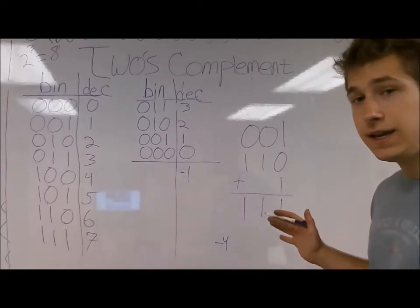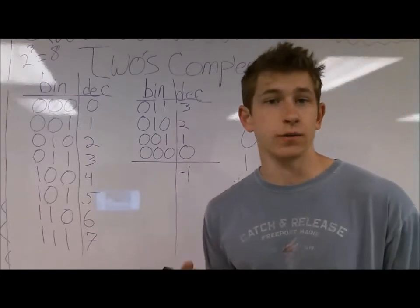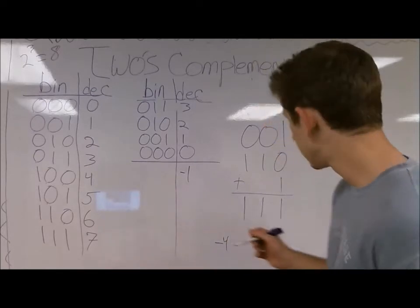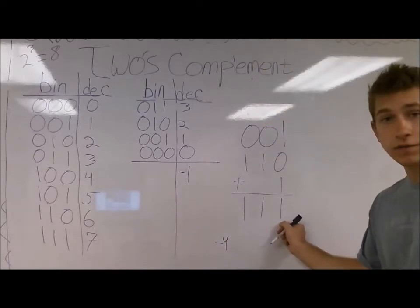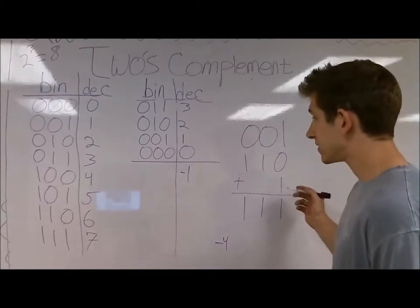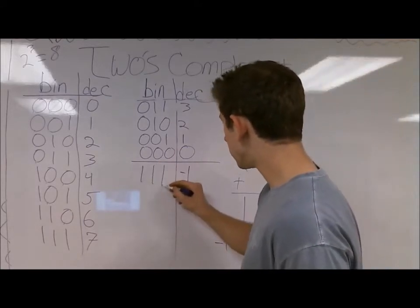In any scope or range that you have, no matter how many bits you have, if all of the bits are 1, that is negative 1. Here, we have 3 bits, and all of them are 1s. This is negative 1. It's a way to test. So we can fill this in: 1, 1, 1.